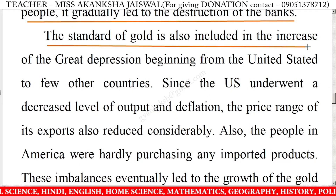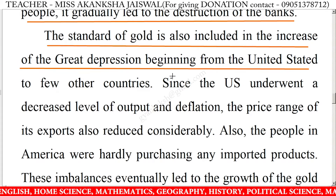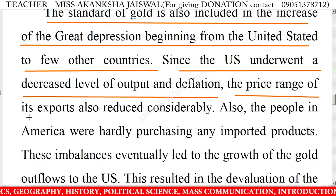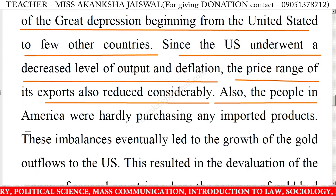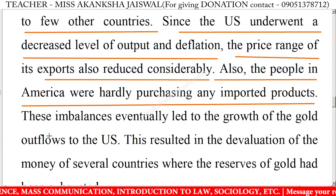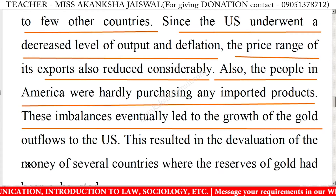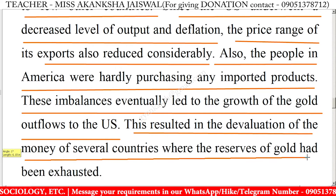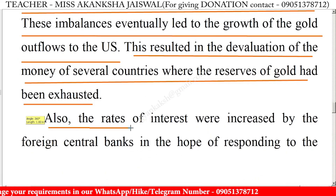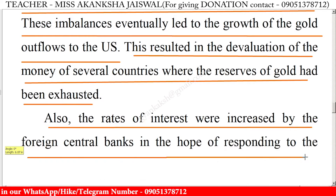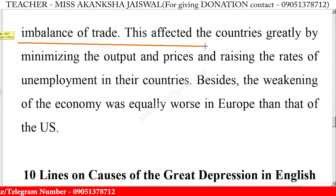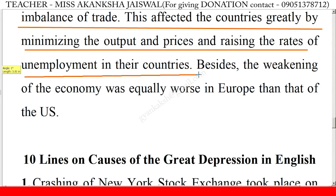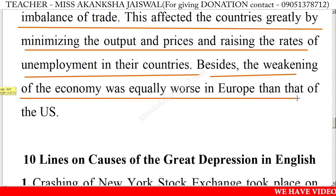The gold standard also played a role in increasing the great depression, spreading from the United States to other countries. Since the U.S. underwent decreased output and deflation, the price range of its exports also reduced considerably, and Americans were hardly purchasing any imported products. These imbalances led to gold outflows to the U.S., resulting in the devaluation of money in several countries where gold reserves had been exhausted. Foreign central banks raised interest rates to respond to trade imbalances, which minimized output, lowered prices, and raised unemployment.